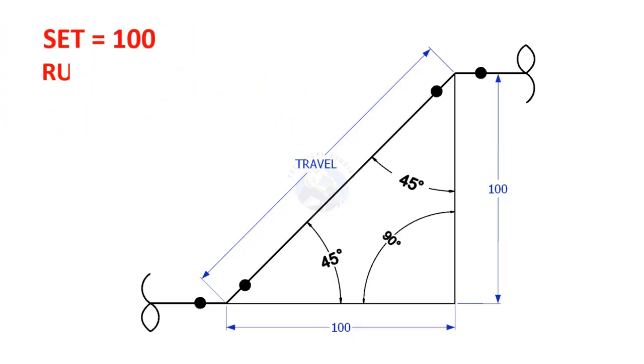Let us calculate the travel if the set and the run are 100. 100 multiplied by 1.414 is 141.4. So here the travel length is 141.4.